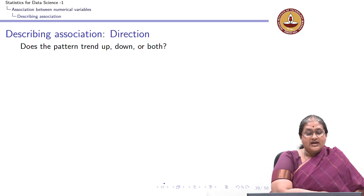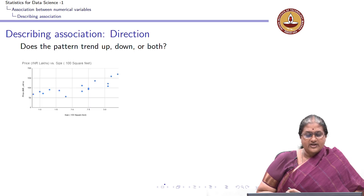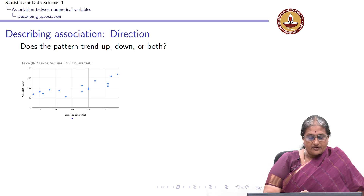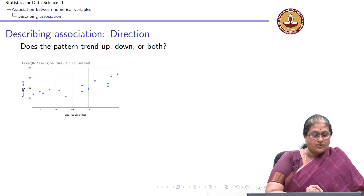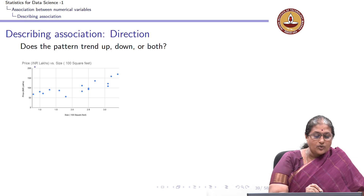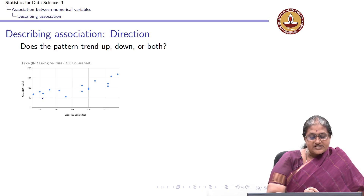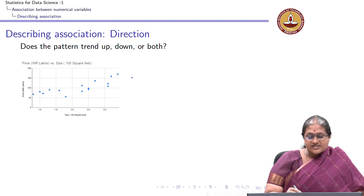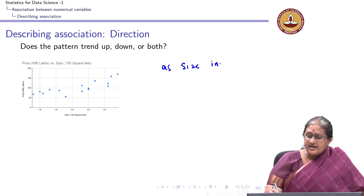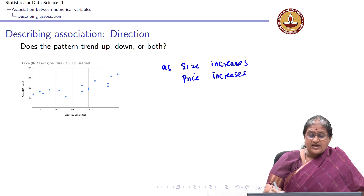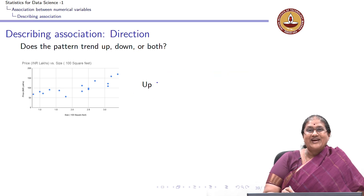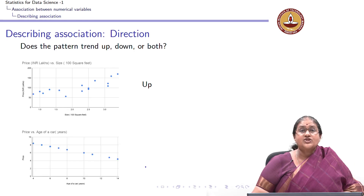The first question is: does the pattern trend up or down? Going back to the example where I plotted the size of a house on the x-axis and price on the y-axis, we can see that as the sizes of homes increase, the price also increases. There is a clear upward trend.